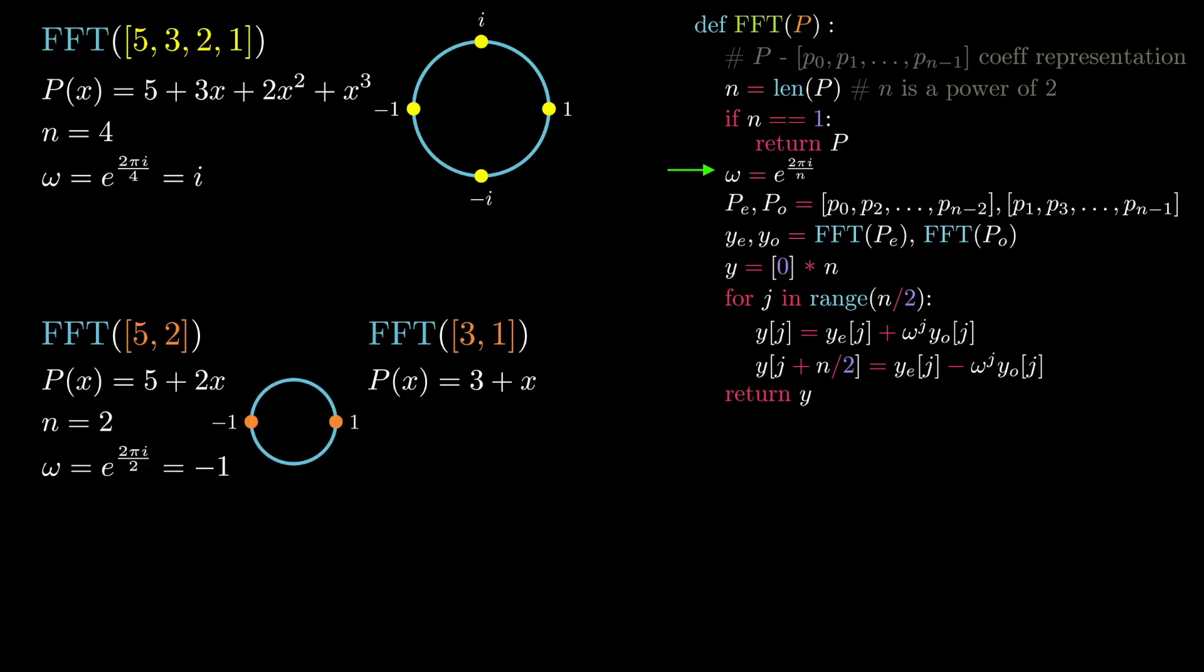We then proceed with another split of the polynomial into even and odd degree terms, both of which are now just constants. We pass these zero degree polynomials into two more recursive calls. Both of these recursive calls end up hitting the base case and returning whatever input was just passed in.